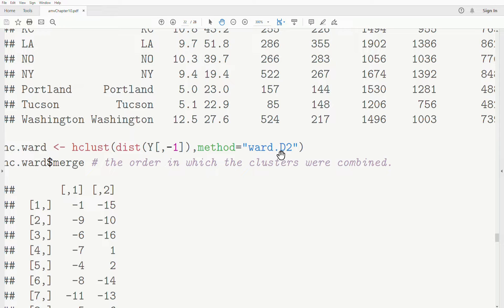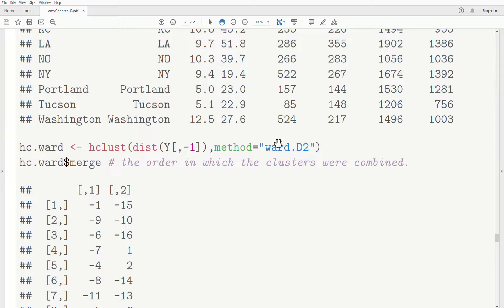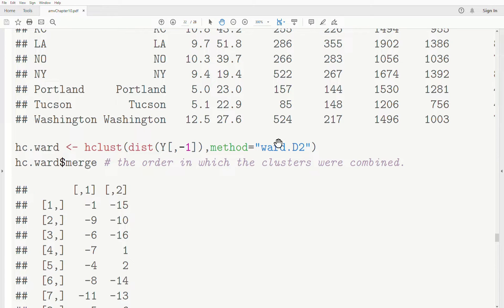Now there's a method ward.d and a method ward.d2. And d2 is the historical, it's accurate for ward 2 when it was first invented in, I think, 1963. So all that information is stored in a variable which we call HC ward.